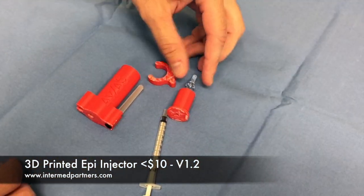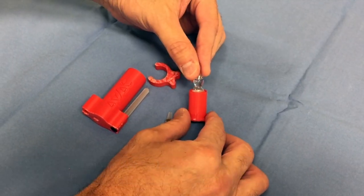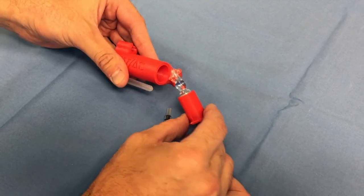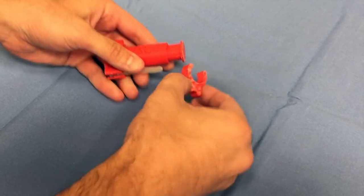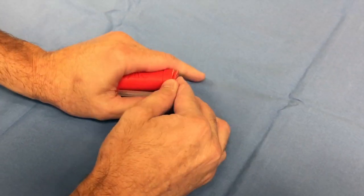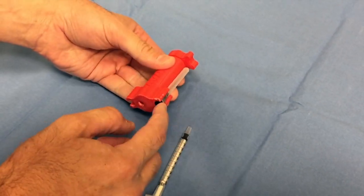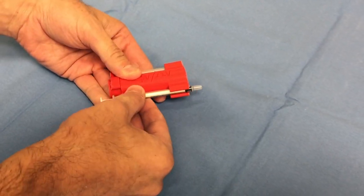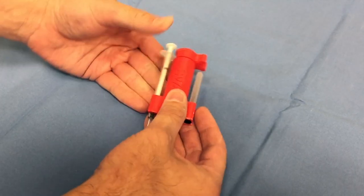Okay, so version 2. We put the epinephrine in the little base, we put this into here, and we put on our protective cap. Then we made a needle holder and we eliminated the three-way stopcock.